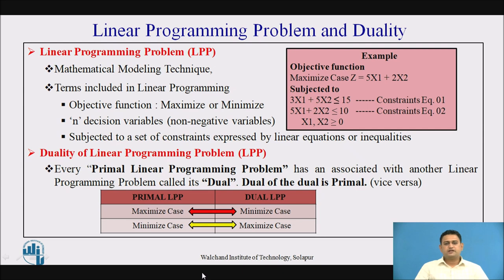What is a linear programming problem? It is a mathematical modeling technique in which we have terms like an objective function — either a maximized case or minimized case — and n number of decision variables which are non-negative. This objective function is subject to a set of constraints expressed by equations or inequality equations. Here, this example of an LPP shows a maximized objective function subject to two inequality constraints, with two decision variables x1 and x2 restricted to be non-negative.